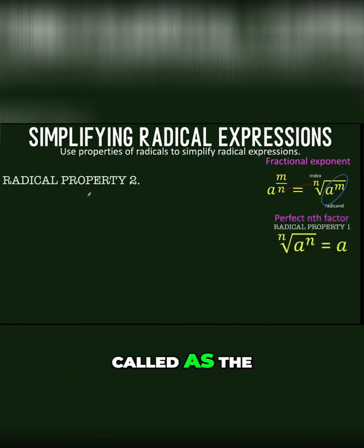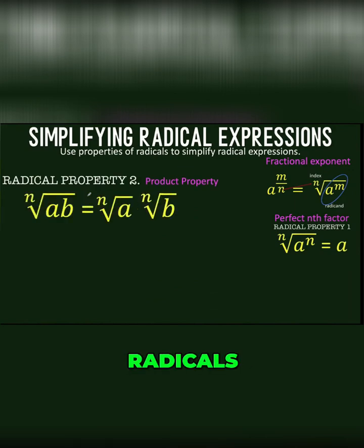The other property is called the product property of radicals. When we have the n-th root of a times b, we can separate this as two radicals, the n-th root of a times the n-th root of b.